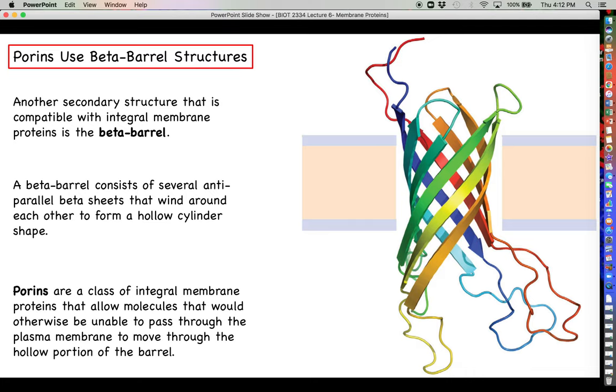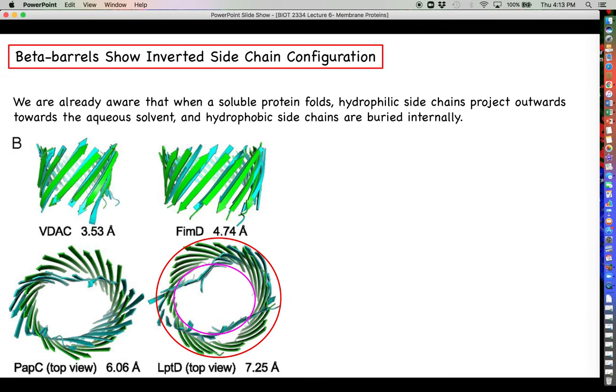One of the most common types of membrane proteins that exemplify this structure are called porins. These are membrane proteins that allow molecules to pass from one side of the membrane to another that otherwise would be excluded, and those molecules move through the hollow portion of the barrel so they completely bypass the actual hydrophobic portion of the membrane.